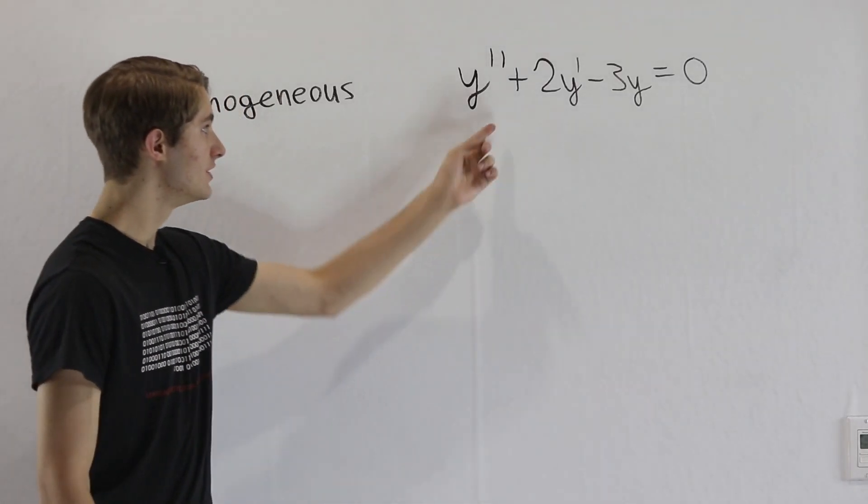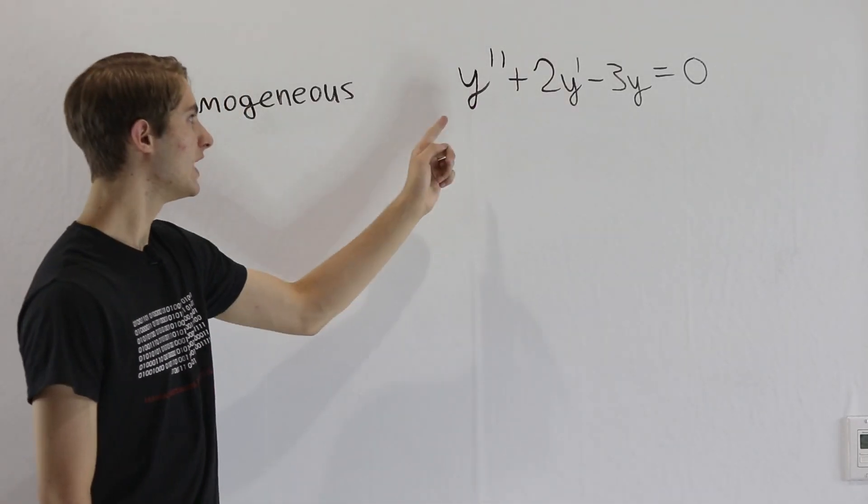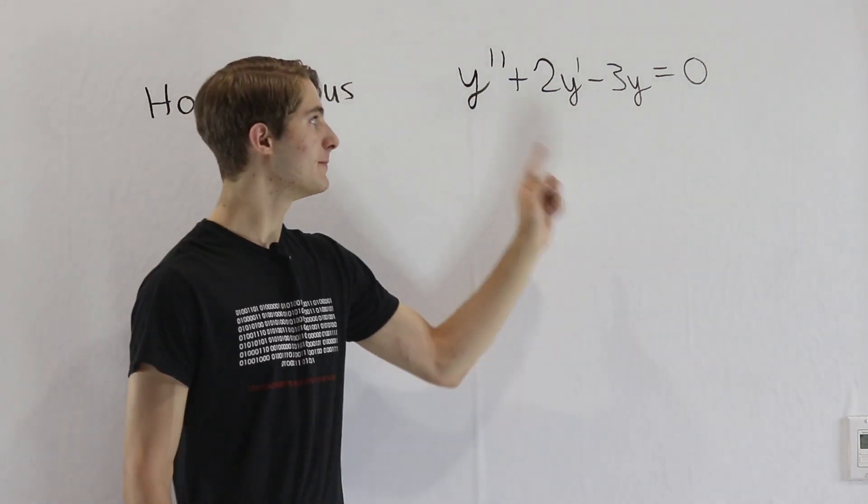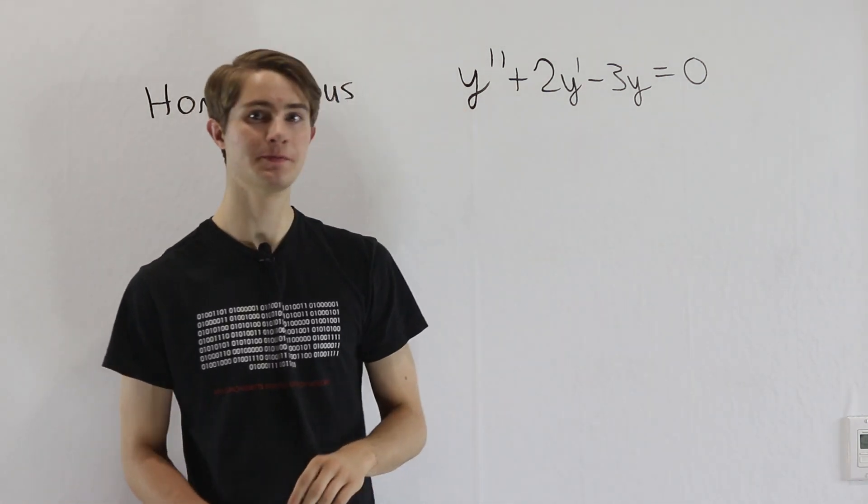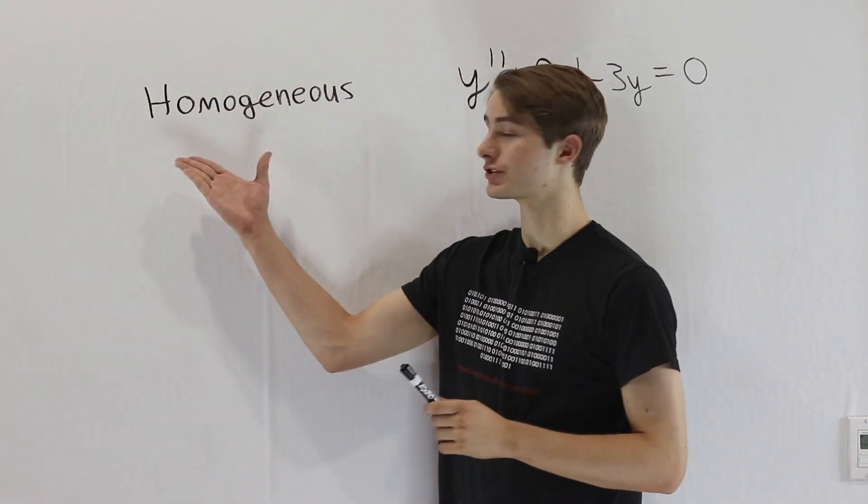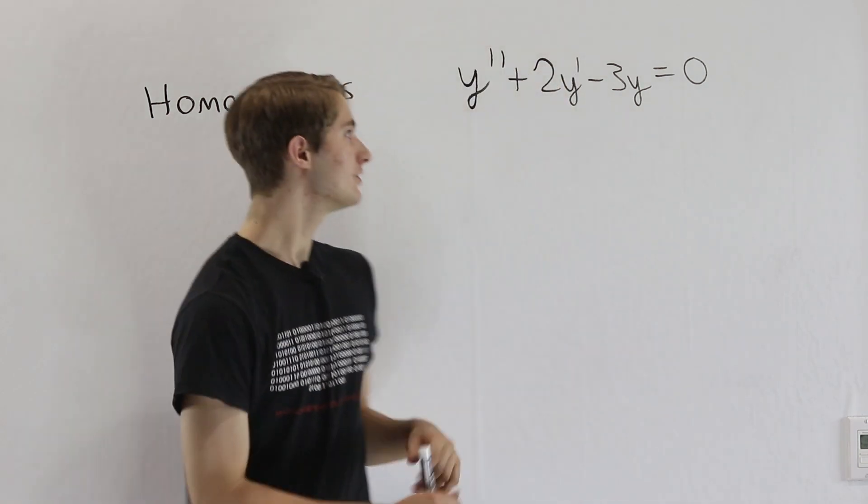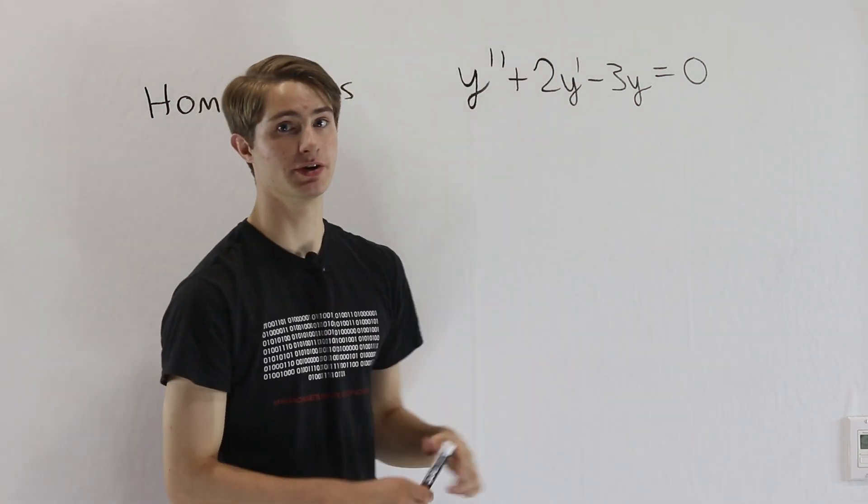So we are going to learn how to solve this differential equation right here: y double prime plus 2y prime minus 3y equals 0. And this type of differential equation is called homogeneous because all of the derivatives add up to 0.